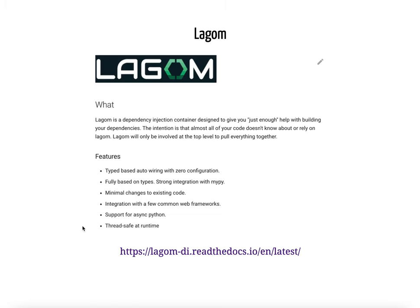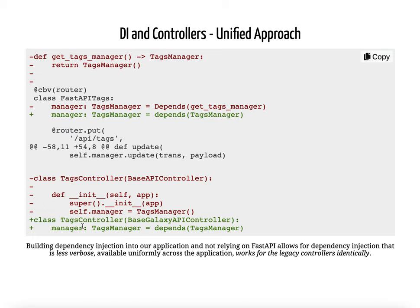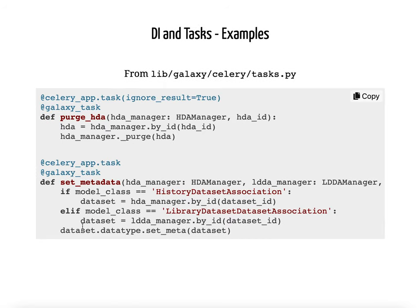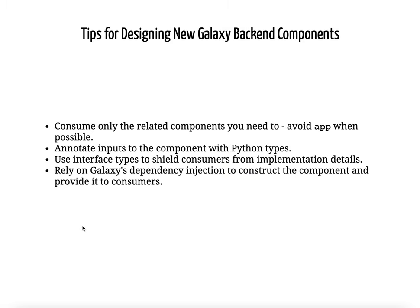There are a few different libraries for doing this. Lagom is a very modern one written to be Python 3 native and type-based. In the longer version of this talk, I go through how dependency injection and types sort of make each other better. I go through how we were able to use dependency injection to unify the two kinds of controllers we currently have in the Galaxy code base — the newer FastAPI controllers and the older Galaxy framework controllers — and we're able to use dependency injection uniformly across every layer of the application, including the new Celery tasks which leverage the dependency injection. I also talk about deconstructing the Galaxy app object a little bit further.